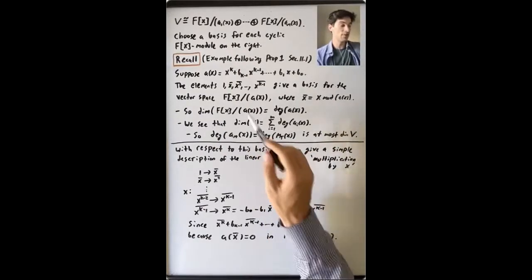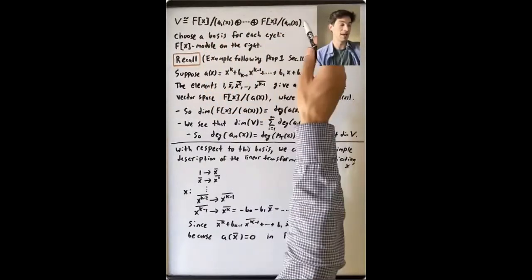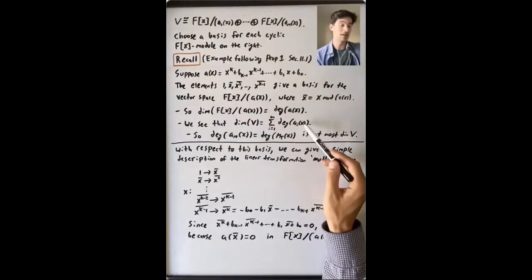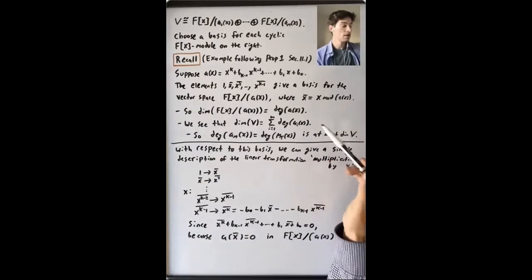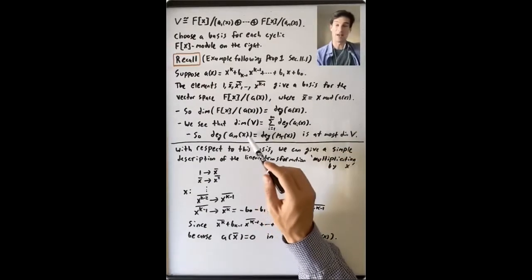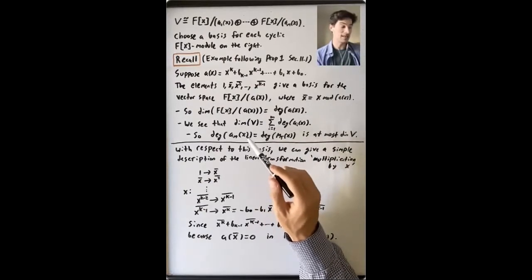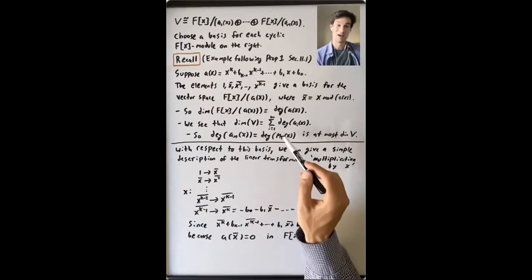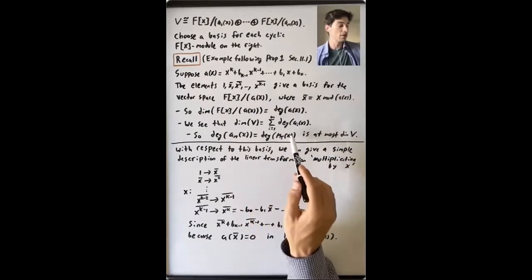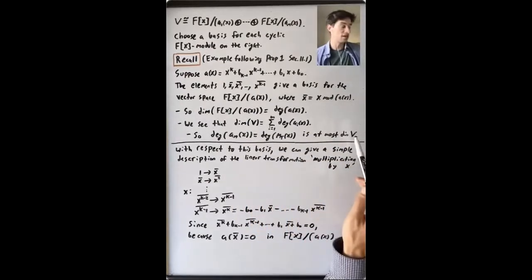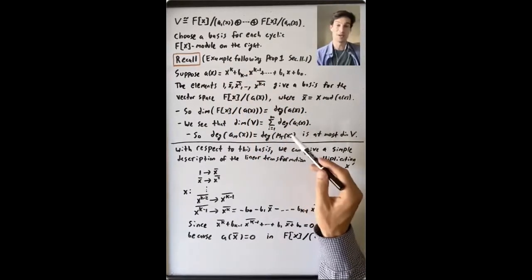The dimension of V is the sum of the dimensions of these modules on the right-hand side, which is the sum of the degrees of these invariant factors. In particular, aₘ(x), the largest invariant factor, is the minimal polynomial of our linear transformation T that gives V this F[x]-module structure. So the degree of the minimal polynomial is at most the dimension of V — if V is an n-dimensional vector space, the degree of the minimal polynomial is at most n.